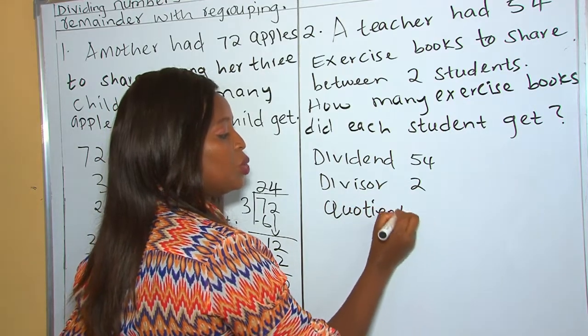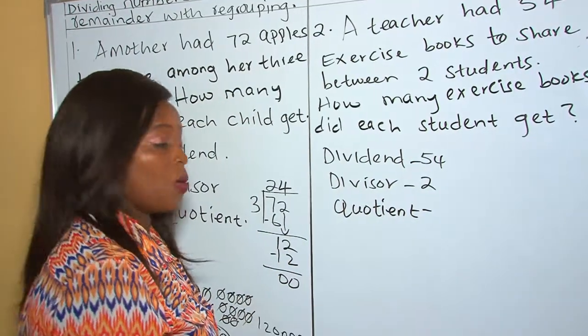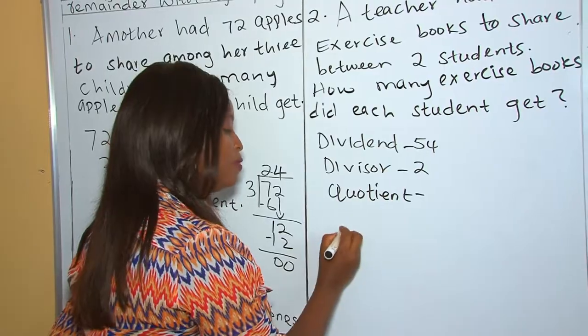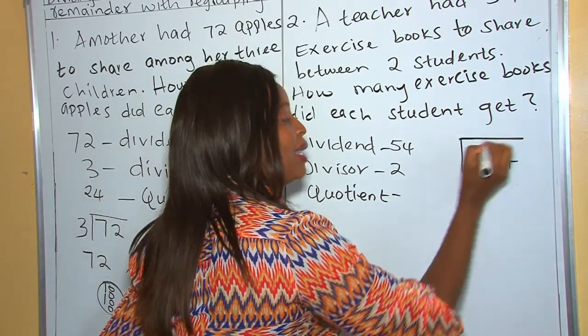And it's the answer that we're going to get after working out our division. Therefore, we are saying 54 divided by 2.